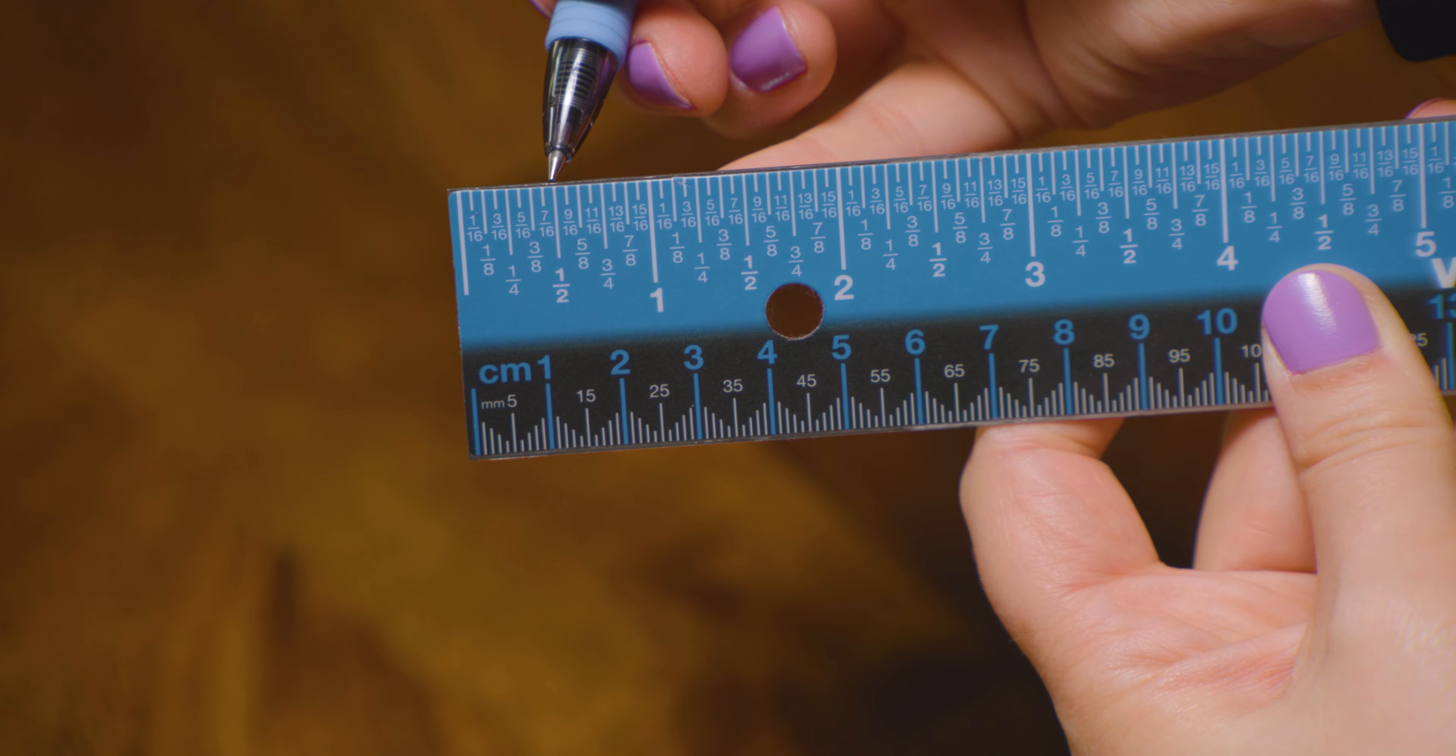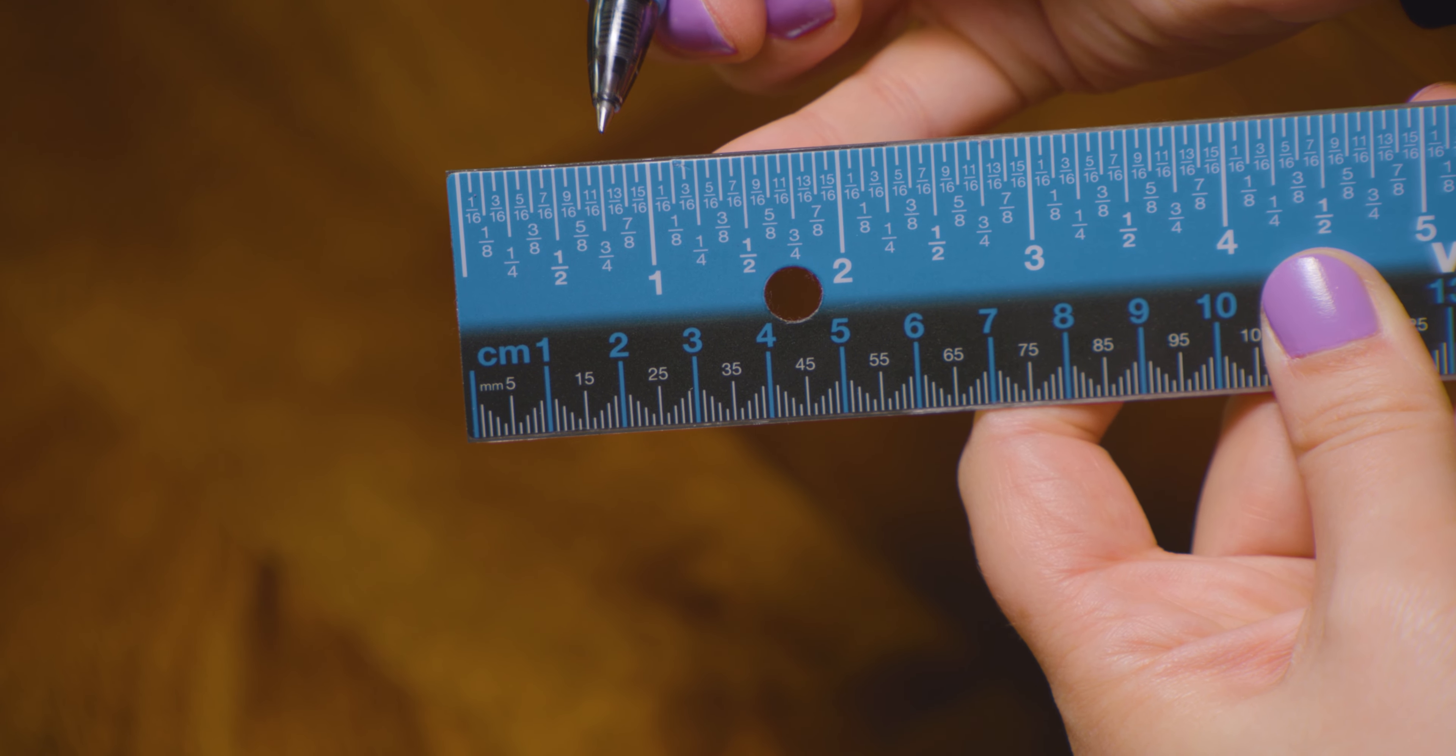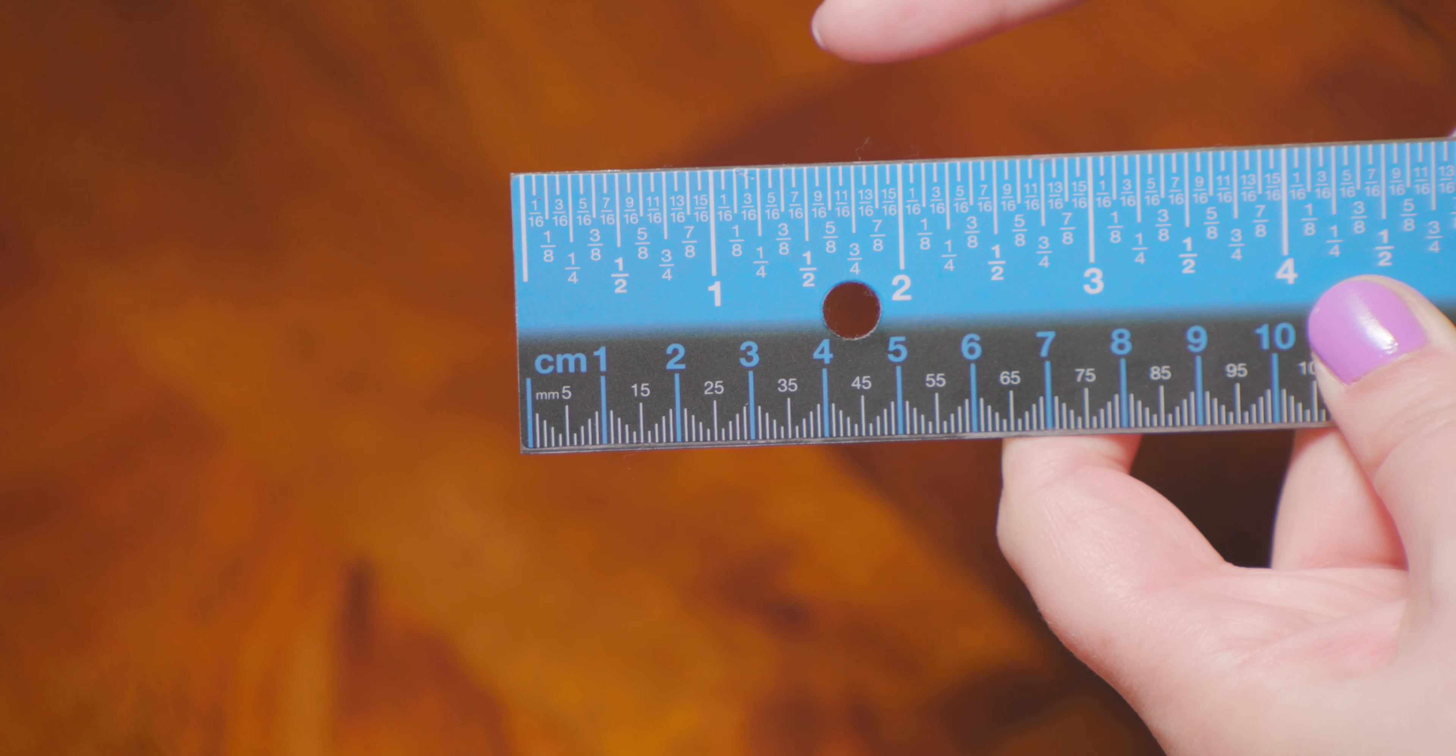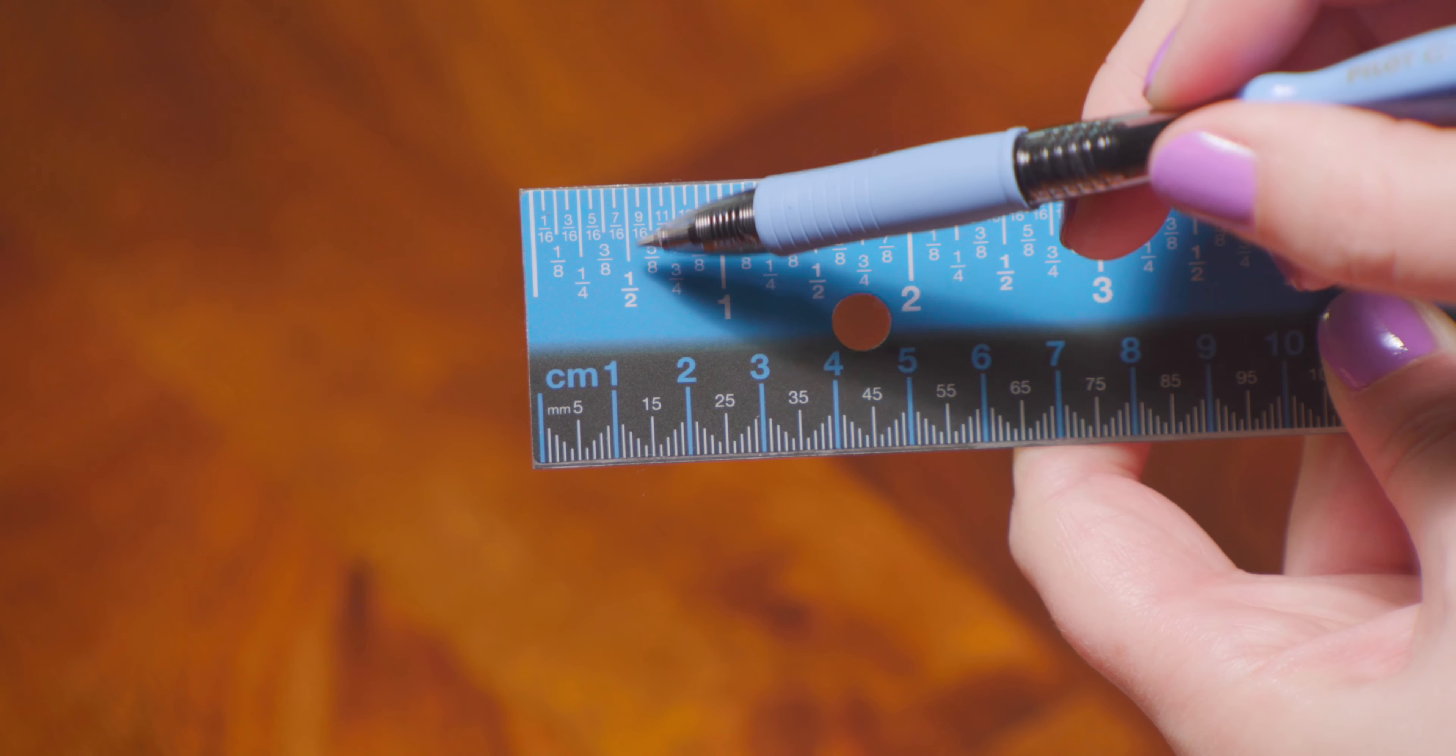To signify 1/16 inch increments. Though note that some rulers or measuring tapes may have more or less depending on the level of precision. For rulers that measure in 1/16 increments, the longest halfway mark will be the half inch mark.